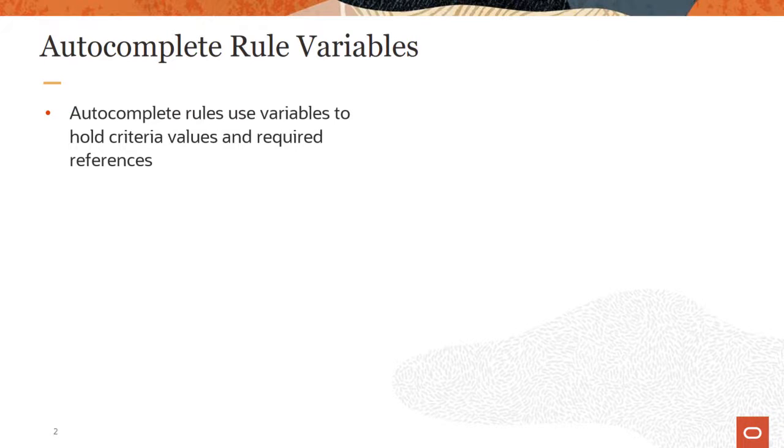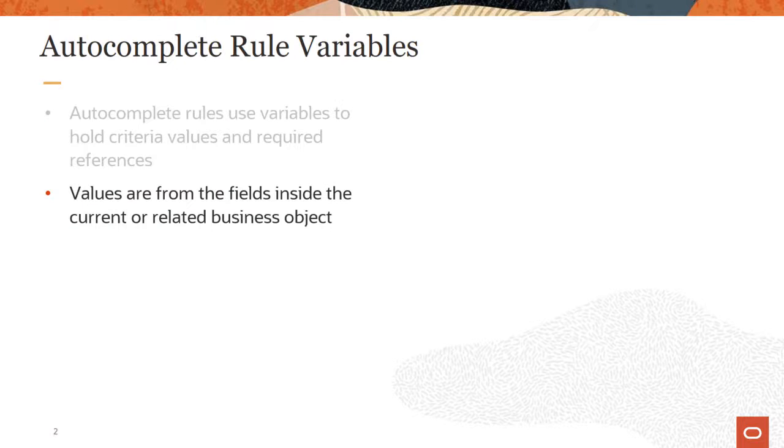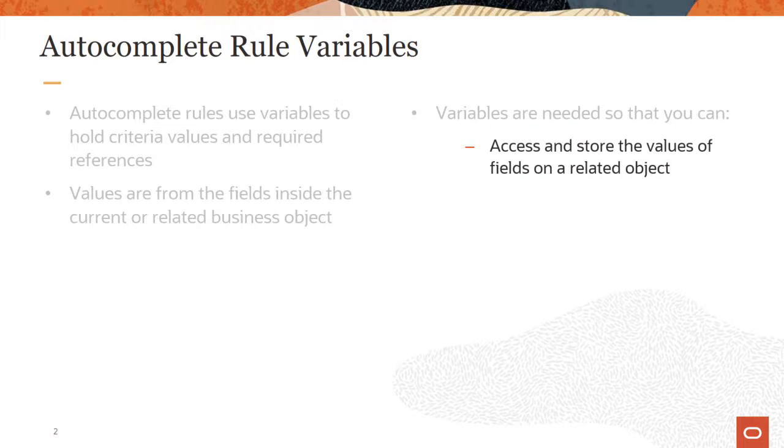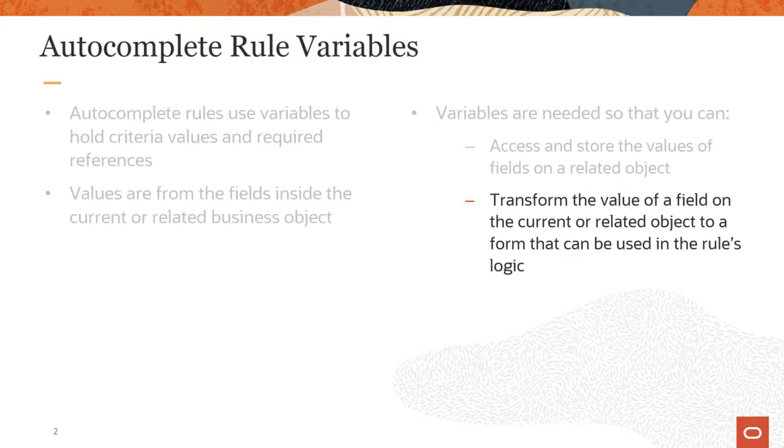Autocomplete rules use variables to hold criteria values and required references to be used in the logic of the rule. These values are from the fields inside the current or related business object. Variables are needed so that you can access and store the values of fields on a related object, and transform the value of a field on the current or related object so that it's in a form you can use in the rules logic.